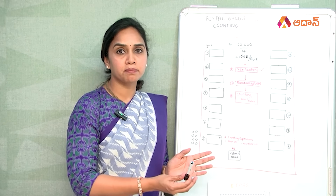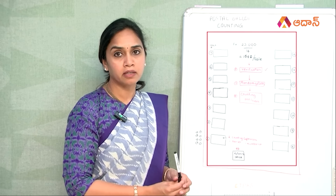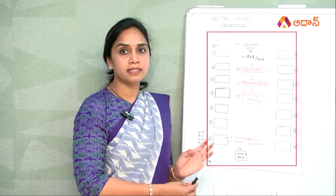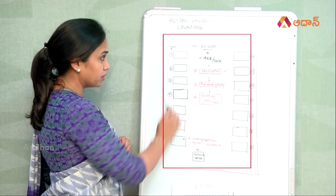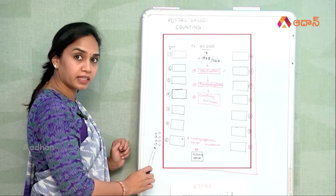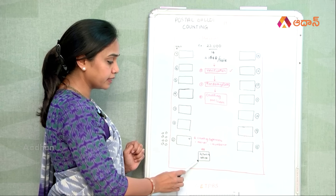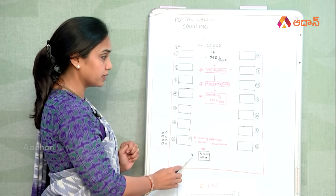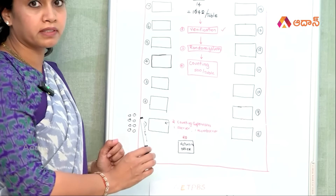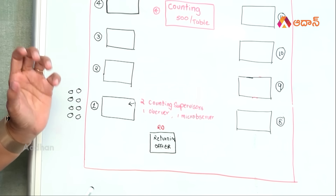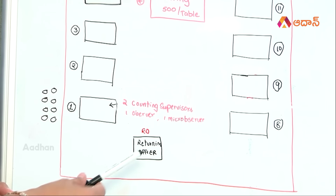There will be a count of total postal ballots in that hall. You will have to count 14 tables. Now we are going to look at the MPD setup. This room has 14 tables and a red fence. You can see the counting agents here. The returning officers will be supervised at these tables. You can see one counting supervisor and a micro-observer at each table.